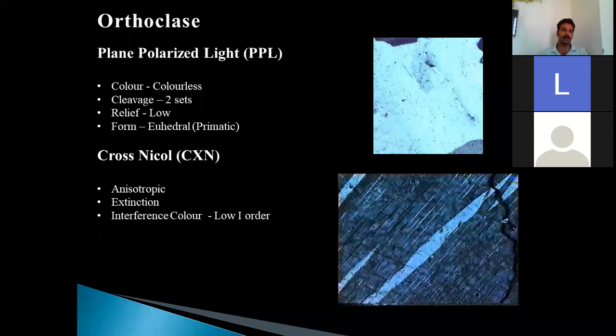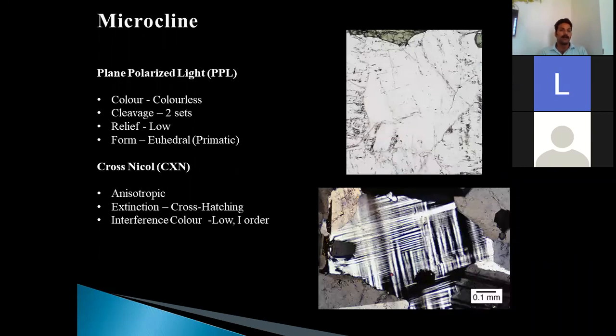Then we have seen the orthoclase where it is a member of feldspar series. It is colorless. Two sets of cleavage are visible and the relief is very low. Prismatic laths are very common. Low first order interference color can be seen. In microcline, the distinctive property of it is cross-hatching. In the second microphotograph you can see the cross-hatching.